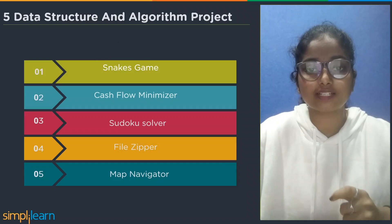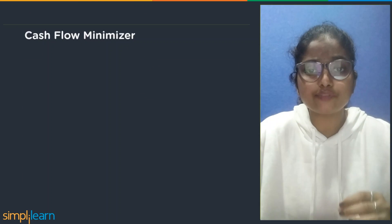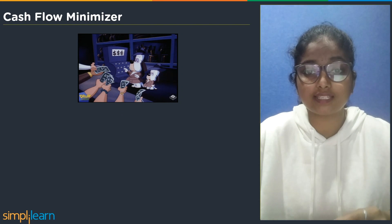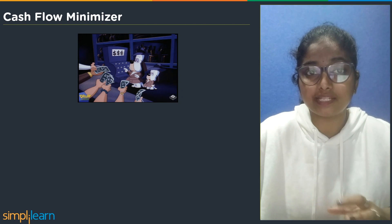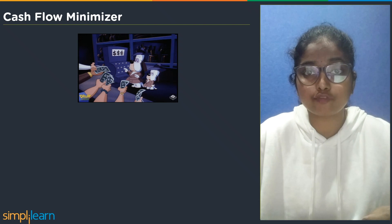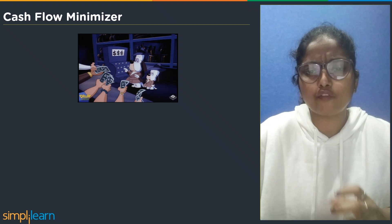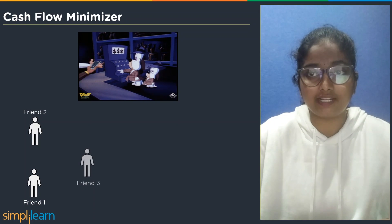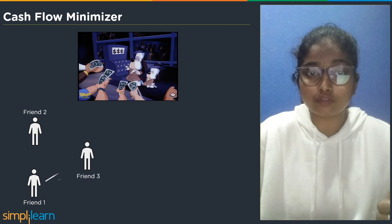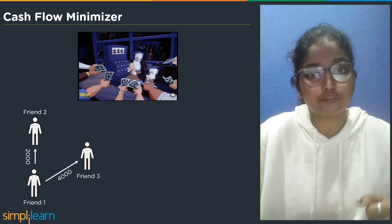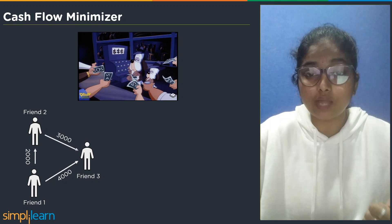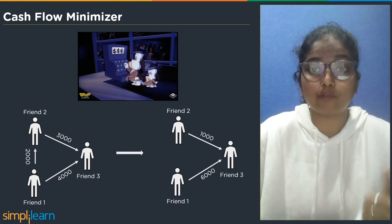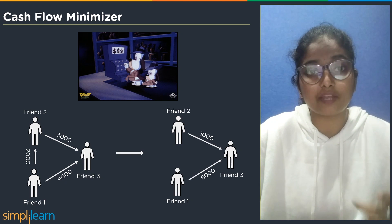The second project is the cash flow minimizer. A cash flow minimizer tracks the net balance of cash moving into or out of a business in a specific time. We build an application to minimize the cash flow using graph concepts. For example, assume three friends: Friend 1, Friend 2, and Friend 3. Friend 1 has to give 4K to Friend 3, and Friend 2 has to give 3K to Friend 3. We can minimize the flow between friends by having Friend 1 pay Friend 3 directly. We can create an application with the same mechanism for a transaction list between any number of friends.